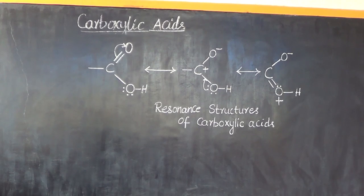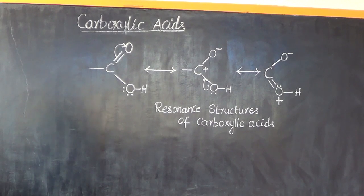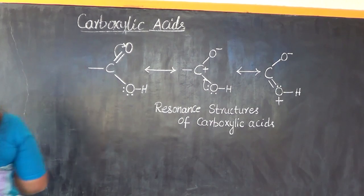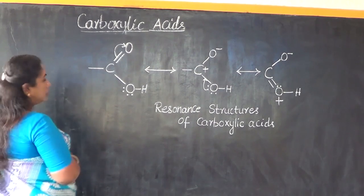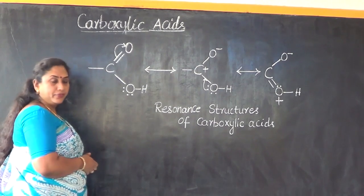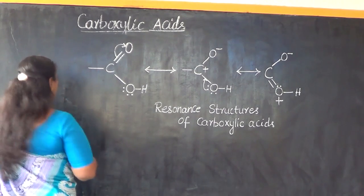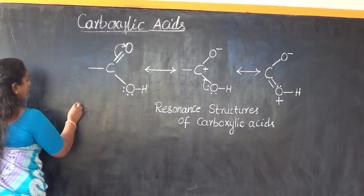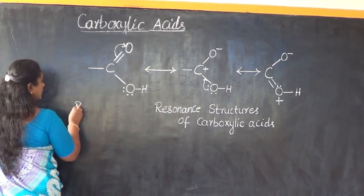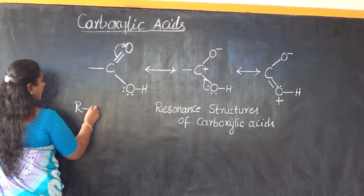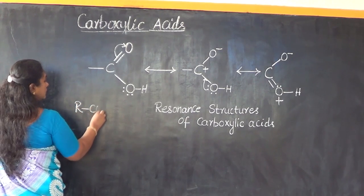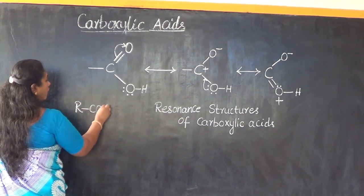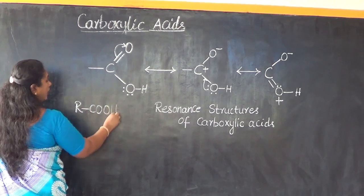In this video lesson, let us understand regarding the structure of the carboxylic acid. The general representation of carboxylic acid is RCOOH.